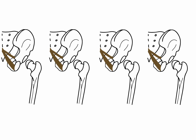Running from the sacrum to the ischial spine is the sacrospinous ligament, and running from the sacrum to the ischial tuberosity is the sacrotuberous ligament. These two ligaments are important as they convert the greater sciatic notch and the lesser sciatic notch into a greater sciatic foramen and a lesser sciatic foramen.